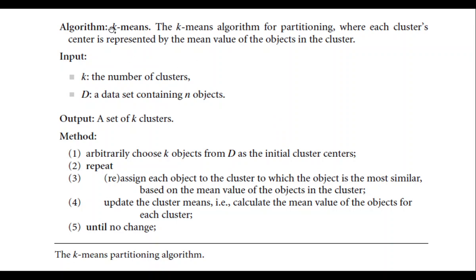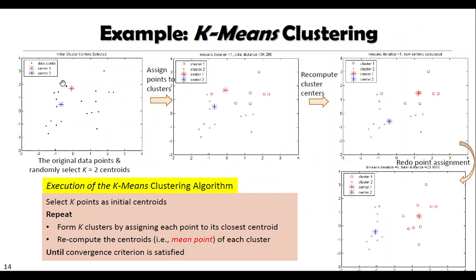This is the stopping criteria: for two consecutive iterations, if there is no change in the clusters, we stop partitioning further. The algorithm is called K-means because we take the mean value of objects in each cluster to define the cluster center — K for the number of clusters, and means for the mean or average value. Diagrammatically, objects are initially assigned to randomly selected cluster centers. We then find which objects are nearer to which cluster, recompute the cluster centers by finding the mean, and continue until the cluster means converge for two consecutive iterations.